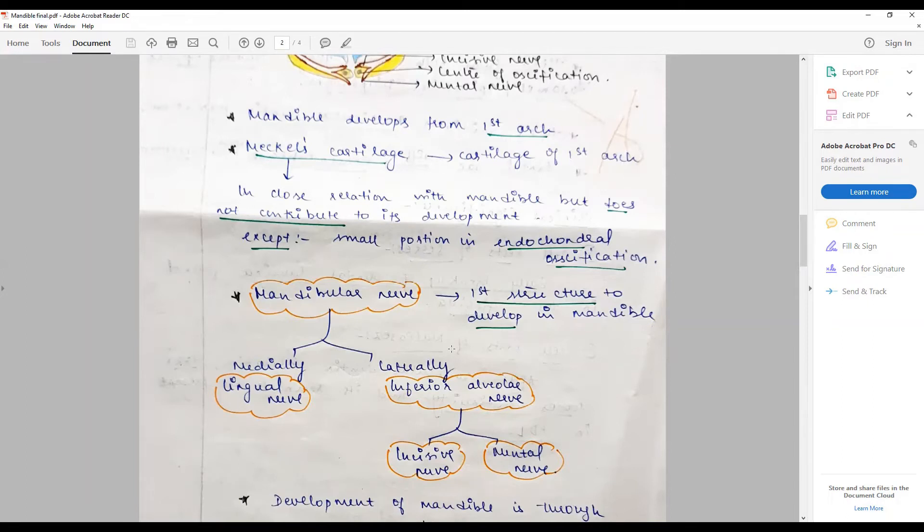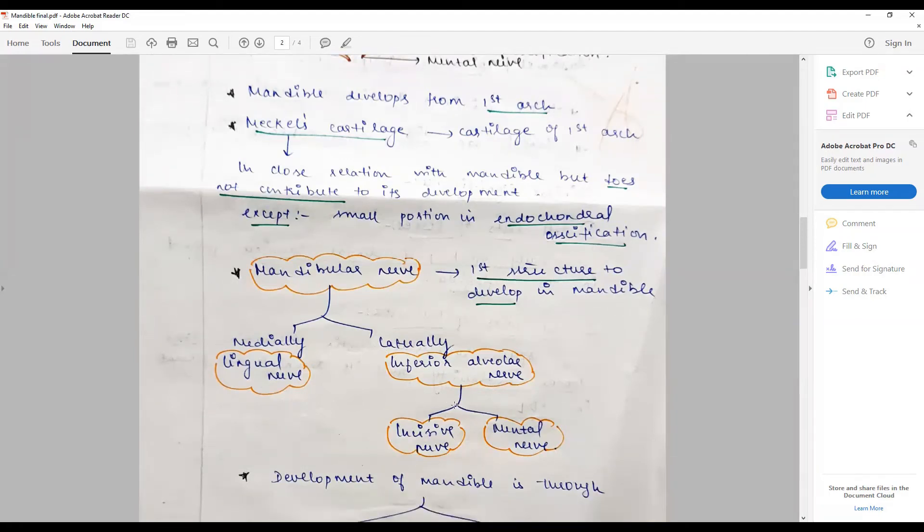When the mandibular nerve develops as the first structure to develop in the mandible, the mandible bone per se starts to develop medially. Mandibular nerve differentiates into the lingual nerve and inferior alveolar. Along the lateral, the inferior nerve majorly divides into incisive nerve and mental nerve.